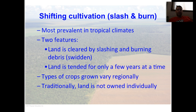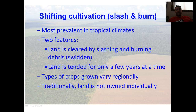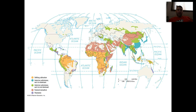The types of crops you might see vary based on cultural preferences or what vegetation might grow and the physical characteristics of the particular place. Traditionally, land under shifting agriculture is not owned individually — it may be owned as a collective or rented and tended to by the people who rely on it for survival. You should note where shifting agriculture is found throughout the world on the map provided.